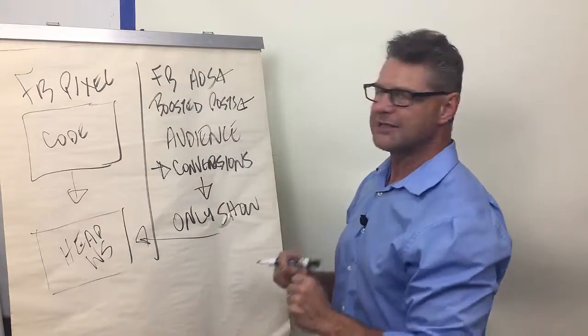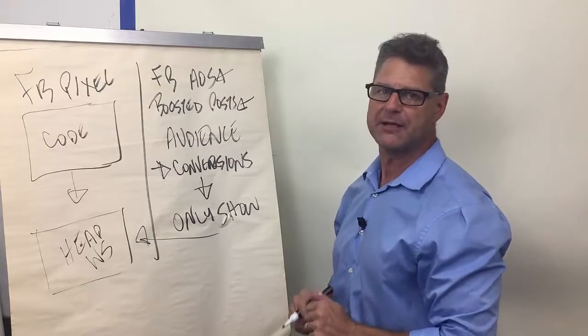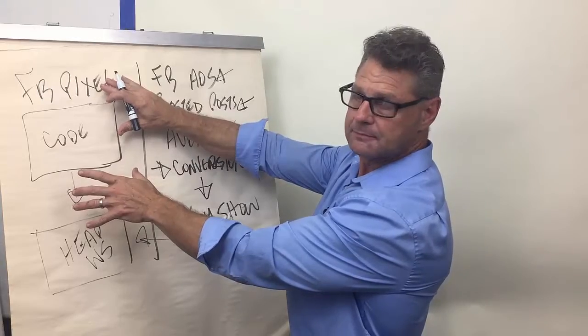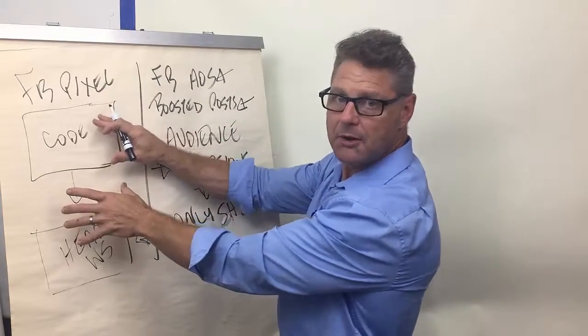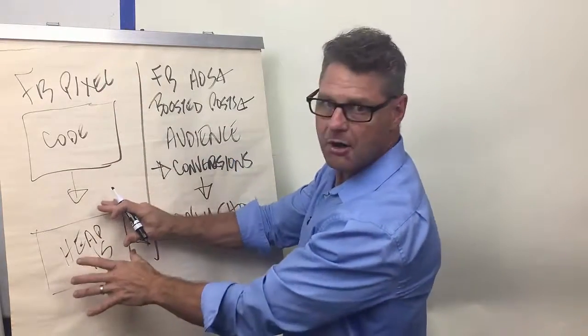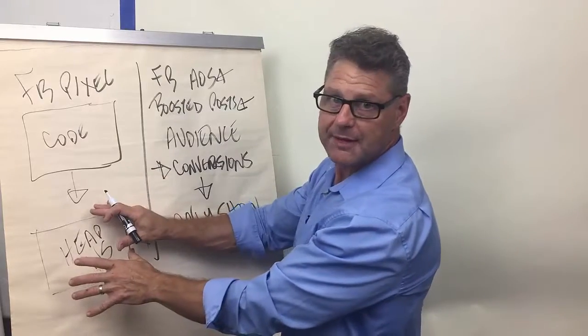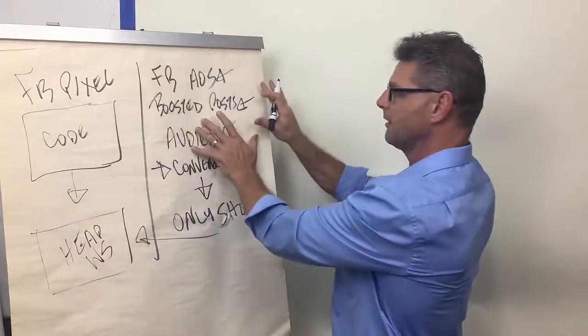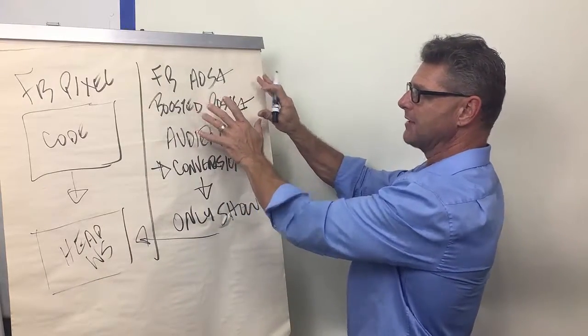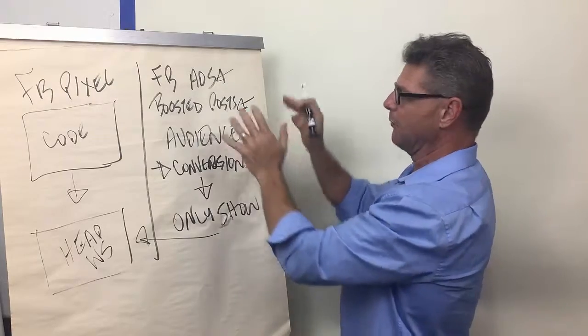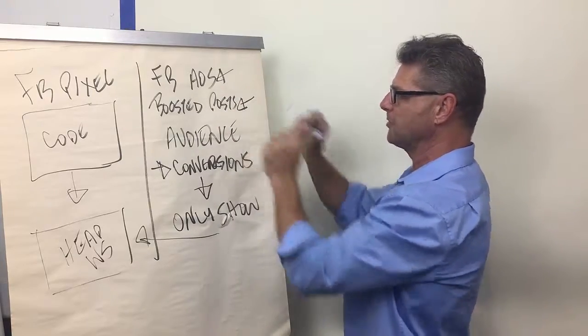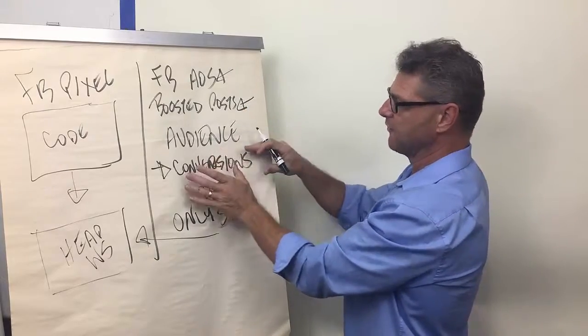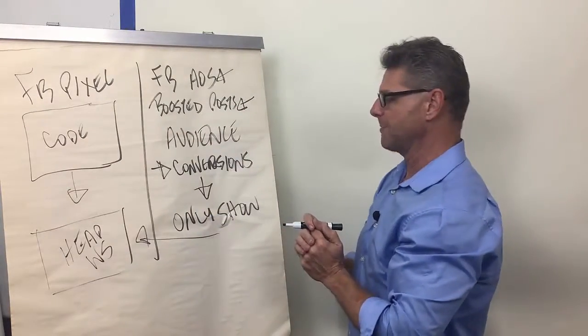So in a nutshell, that's basically how the Facebook pixel works. To summarize, you're going to create a pixel, it's going to give you some code, you're going to put that code on your website, on all your pages on your website, and then you're going to go to your Facebook ads and your boosted posts. And when you create that ad or you boost that post, you're going to choose the audience of conversions, which are people that have went on your website.